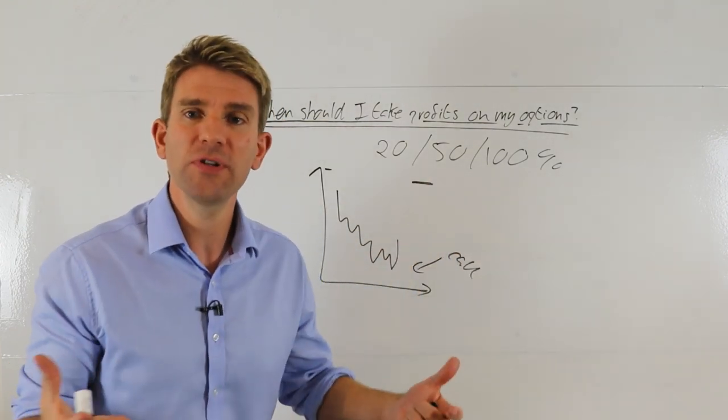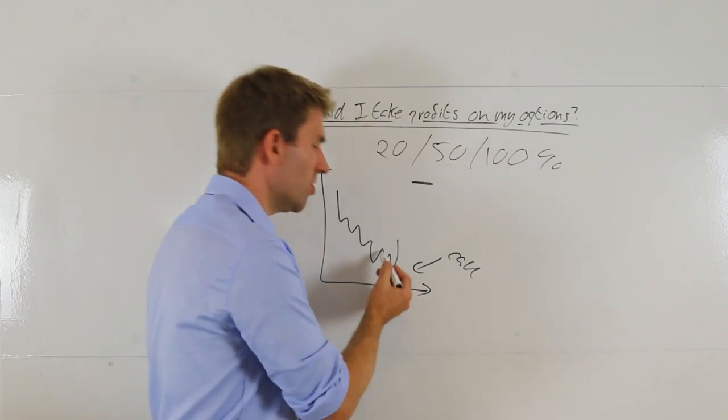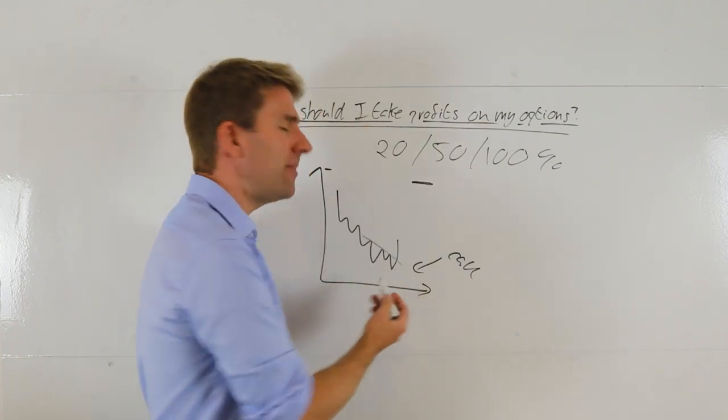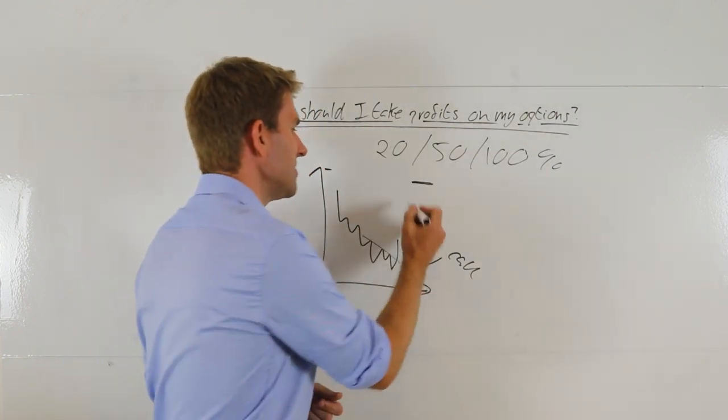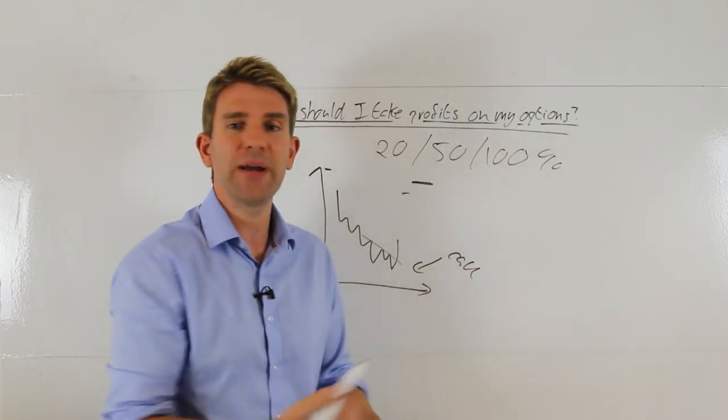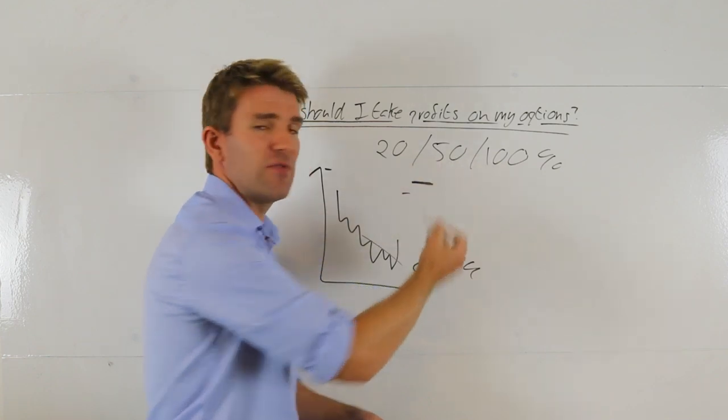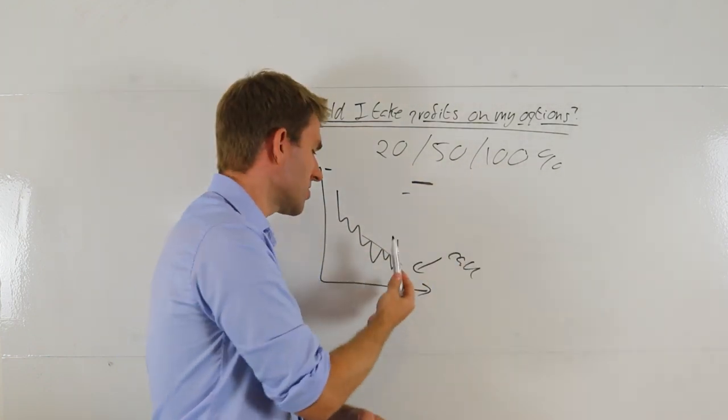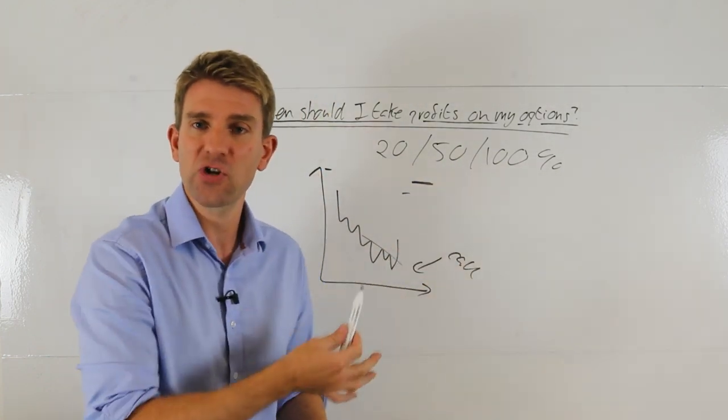But in reality, there's so much more on the table. It's a reversal. Maybe there's volume in there. Maybe it's broken this trend line. Maybe there's all sorts of things that would indicate this is going to go so much higher. And you're taking quick profits, but you're trading based on the profit, the price of the option, not the price of the stock and not the price action of the stock.